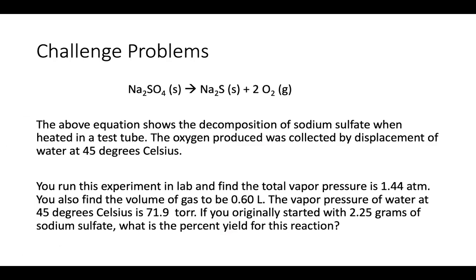This is our second problem — a unique spin on a gas over water problem. The decomposition of sodium sulfate when heated produces oxygen gas collected by displacement of water at 45°C. We're told the total pressure is 1.44 atmospheres, the volume of the gas is 0.6 liters, and the vapor pressure at 45°C is 71.9 torr. If we originally start with 2.25 grams of sodium sulfate, what is the percent yield?